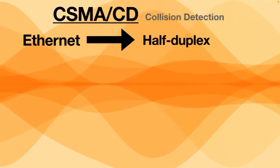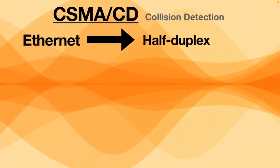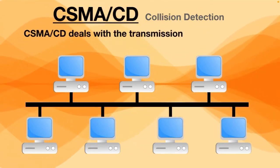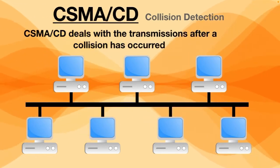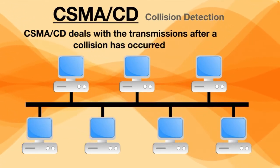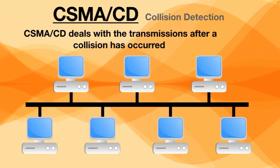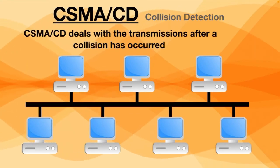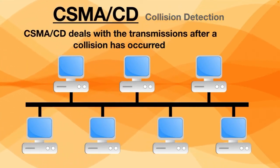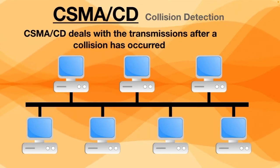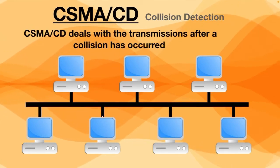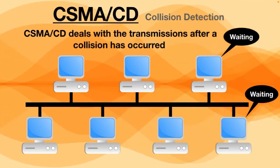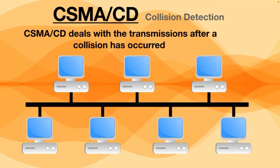Let's break CSMA/CD down in further detail. CSMA/CD deals with transmission after a collision has occurred. Devices using CSMA/CD first sense whether the transmission medium — the cable — is clear before sending data. If it's clear, the device sends the data. If a transmission is already in progress, the device waits for a random amount of time before trying again.